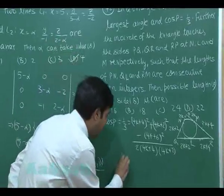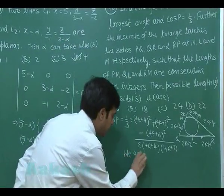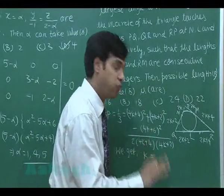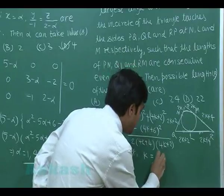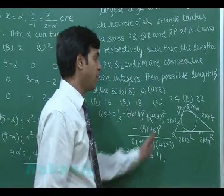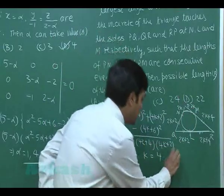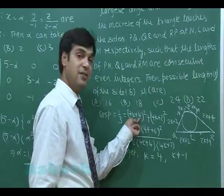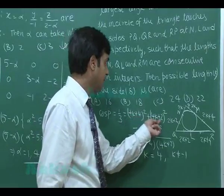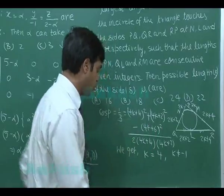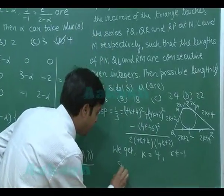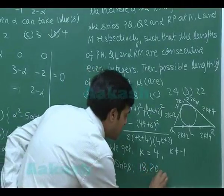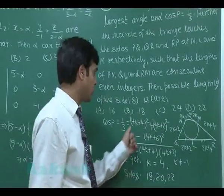On simplifying, we get k = -1 or 4, but -1 is not possible as we are talking about the length of the sides, so k ≠ -1. When I put k = 4, I get sides as 20, 18, and 22. So possible sides are 18, 20, and 22. On substituting k = 4, this gives 16+4 = 20, 16+2 = 18, 16+6 = 22.